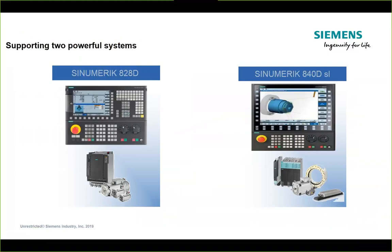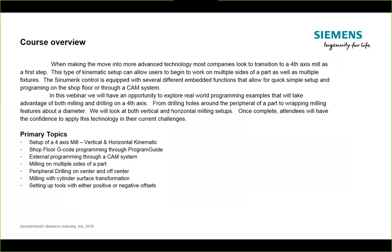Today we're going to talk about topics that apply to two of our three controls in our current portfolio. A lot of what we discuss would also apply to the 808, but everything you see today works in either of those two control platforms. The intention of this seminar is to get your exposure to some of the functionality of a four-axis milling machine — and, probably more important, to understand enough of the code so you can determine whether or not your post is outputting the right stuff.